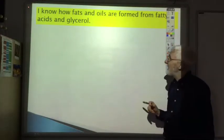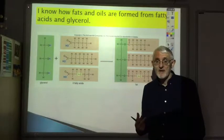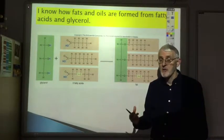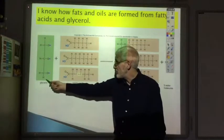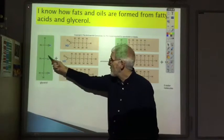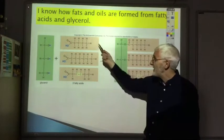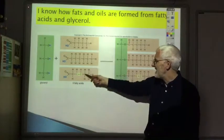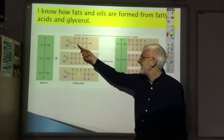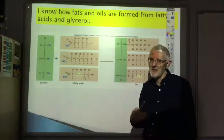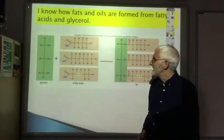I know how fats and oils are formed from fatty acids and glycerol. Fats and oils are esters made by a condensation reaction between an alcohol and a carboxylic acid. For all fats and oils, the alcohol is glycerol - three carbons each with an OH group - so we make three ester links. All fats and oils are made from glycerol and three fatty acids. For the sake of clarity we haven't really drawn very big fatty acids. In reality, these fatty acids - carboxylic acids we call fatty acids - once they contain about 10 to 20 carbons.